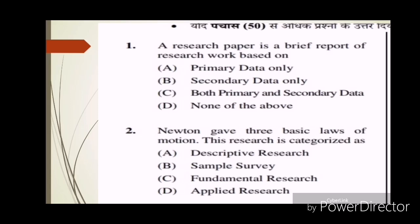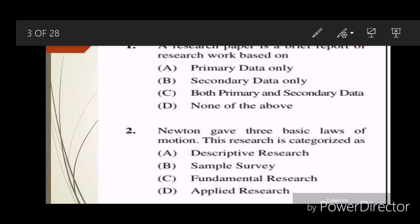First question: A research paper is a brief report of research work based on? Answer is C, both primary and secondary data. Second question: Newton gave three basic laws of motion. This research is categorized as? Answer is C, fundamental research.